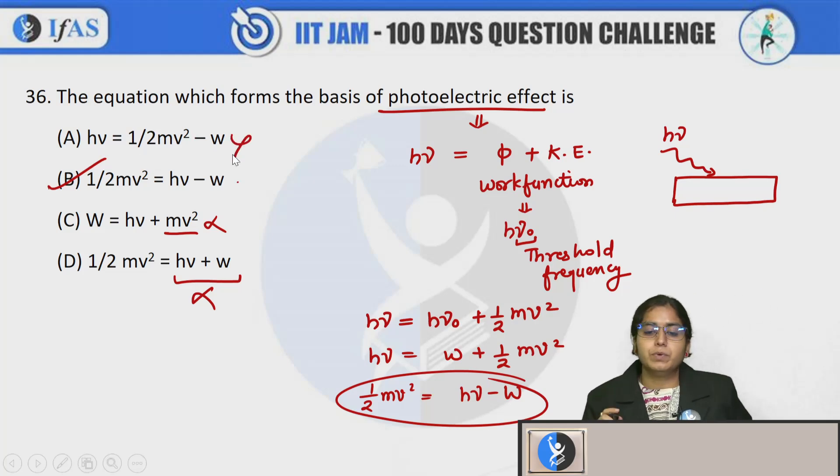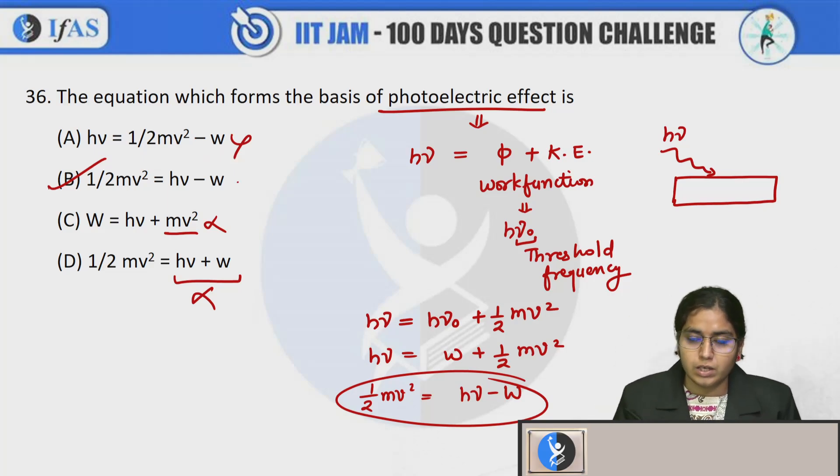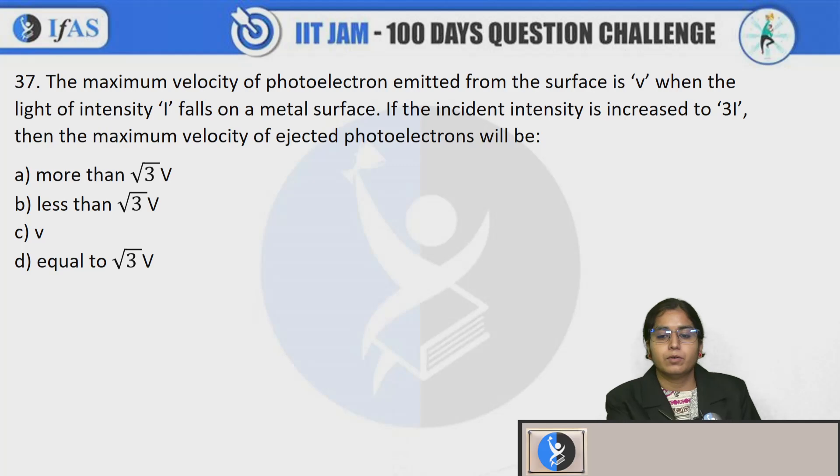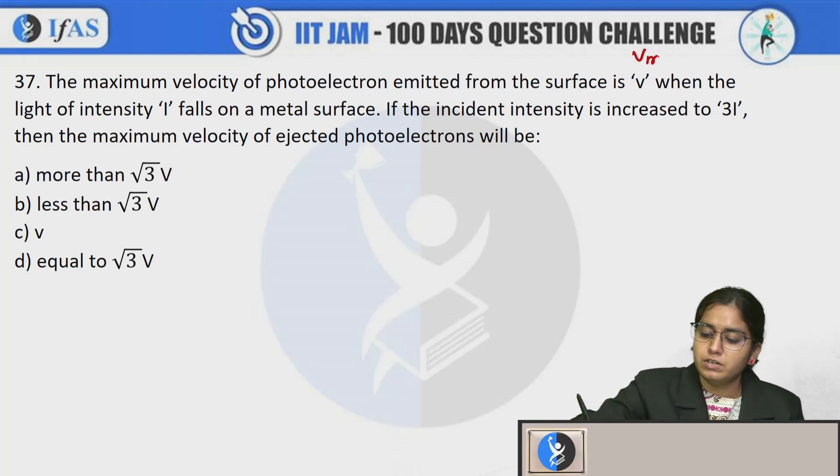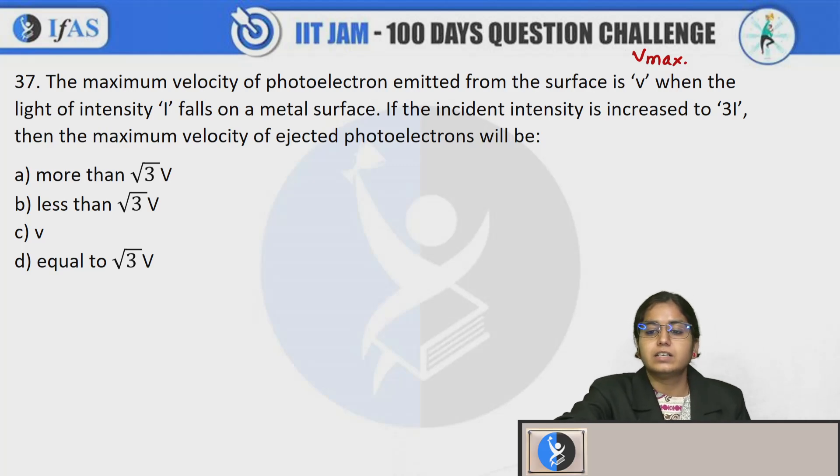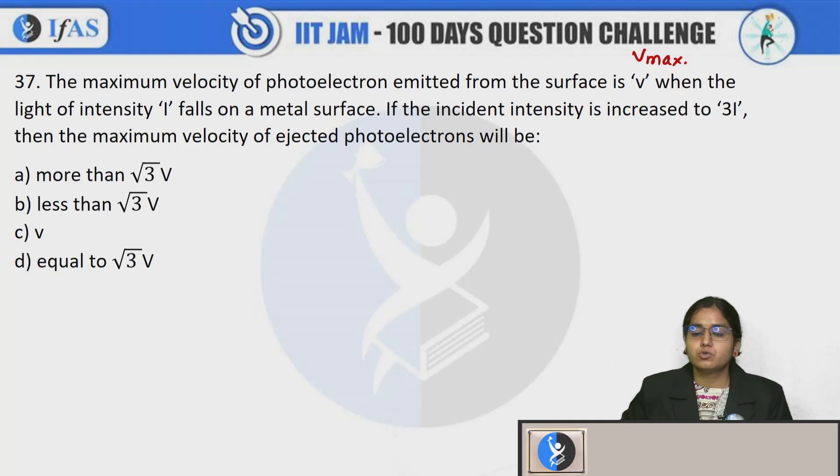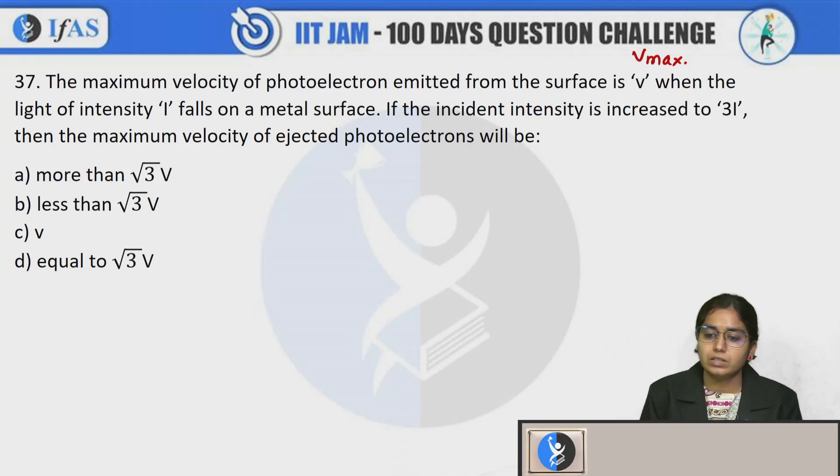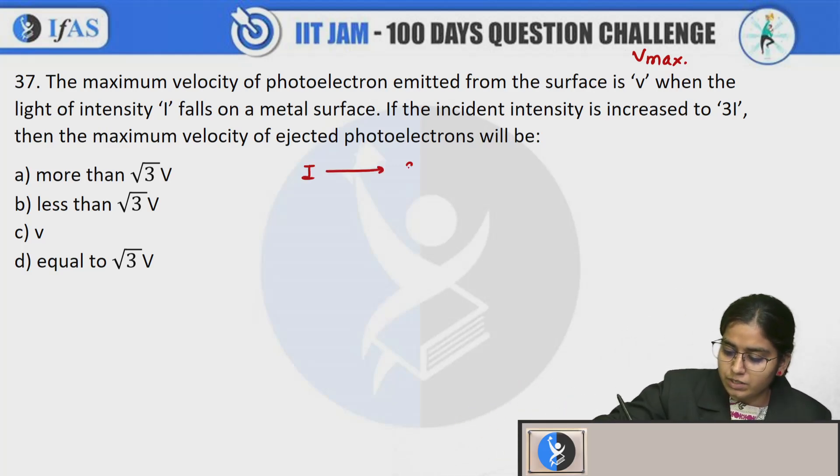Let's move to the next question. The maximum velocity of photoelectron emitted from the surface is v. The light of intensity I falls on the metal surface. If the incident intensity has been increased to thrice of the initial value, 3I, then the maximum velocity of ejected photoelectron - what they are asking is that initial intensity has been increased to 3I. They have tripled the intensity.